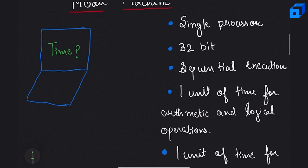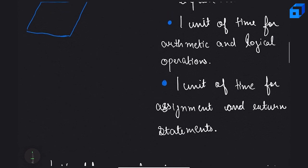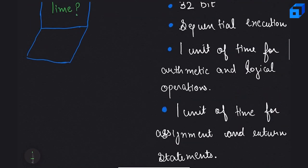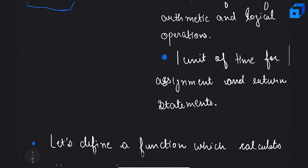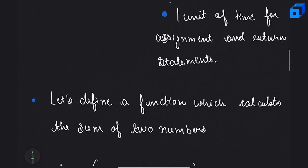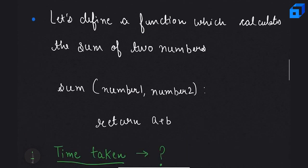The model machine also takes one unit of time for assignment statements and return statements. For example, 'a = b' is one assignment statement. Now let's evaluate the running time of our algorithm based on this model machine, starting with a very simple example — a function that calculates the sum of two numbers.